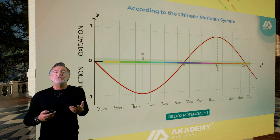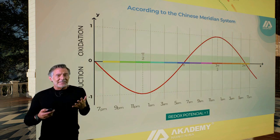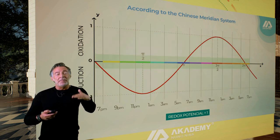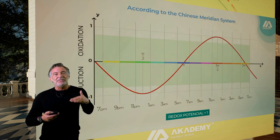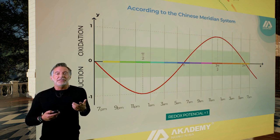that range in terms of redox would be between minus one and one. In this example of the daily cycle, we see that we go from minus one, the highest level of reduction, to one, which is the highest level of oxidation.